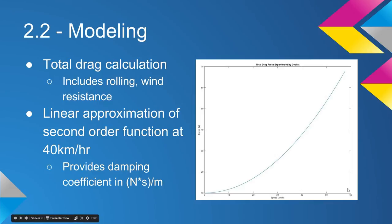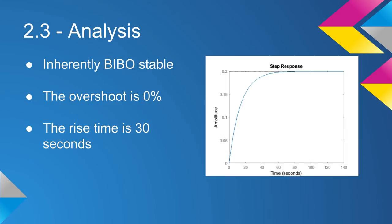Analyzing our system with a step response, you can see there's zero overshoot with a rise time of 30 seconds. Rise time of 30 seconds is important because if it were much shorter, it would cause a lot of strain on the rider and on the bike itself.